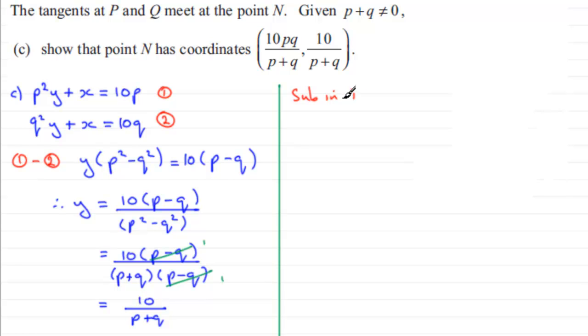So if we sub in equation one, what have we got? Well, we've got P squared multiplied by Y, so we've got multiplied by 10 then over P plus Q, and then we've got plus X equals 10P. And what I'd want to do now is multiply throughout by P plus Q, so we're going to have 10P squared for that first term, and then X multiplied by P plus Q, and then equals 10P multiplied by the P plus Q.